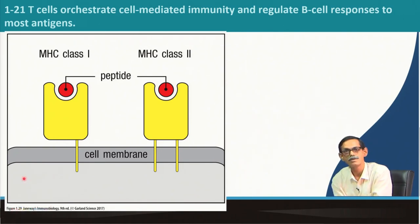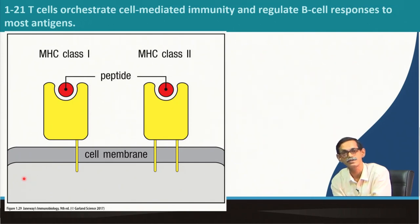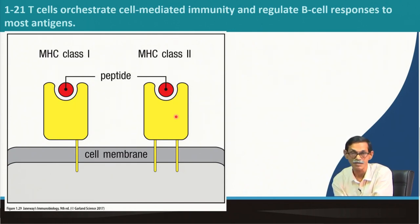Let us recapitulate what we said about the MHC. MHC is the major histocompatibility complex. T cell receptors cannot recognize antigen in native condition alone. The antigen should be presented by either MHC class 1 or MHC class 2 to the T cell receptor — the complex is recognized. B cell receptors can recognize the antigen or pathogen directly, but T cell receptors cannot.